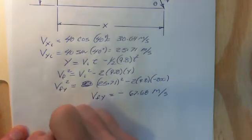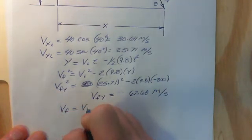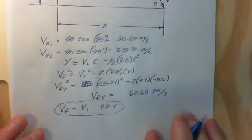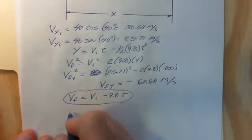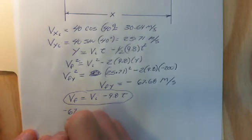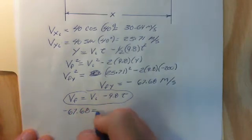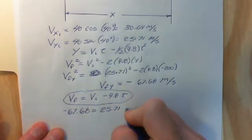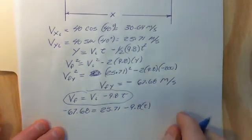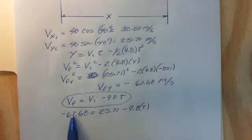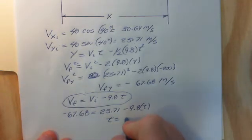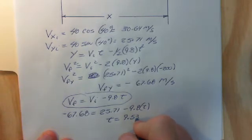Now we fall back to our other equation: vf equals vi minus 9.8 times t. We can use this equation to find time. My final is minus 67.68, equal to my initial of 25.71 minus 9.8 times t. You subtract 25.71 from both sides, add the two together, and divide by negative 9.8. When you do that, you find that time is equal to about 9.53 seconds. That's the total time the object is in the air.